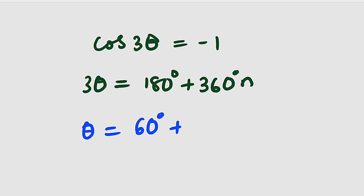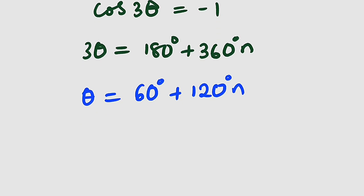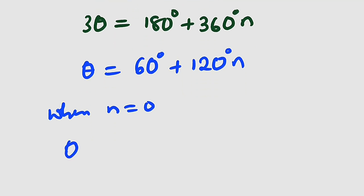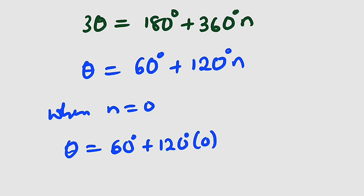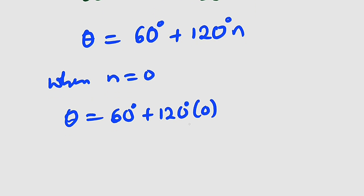And 360 divided by 3 is 120, so theta equals 60 degrees plus 120n degrees. The solution range is 0 to 360 degrees. When n equals 0: theta equals 60 plus 120 times 0 equals 60 degrees — the first solution.